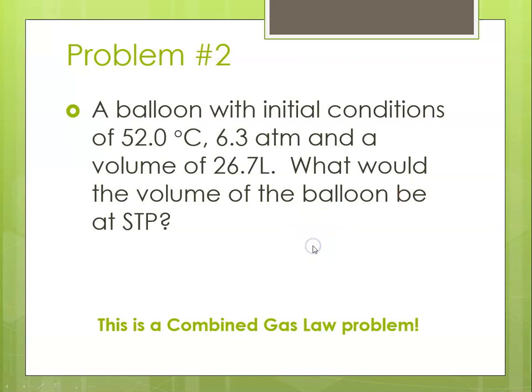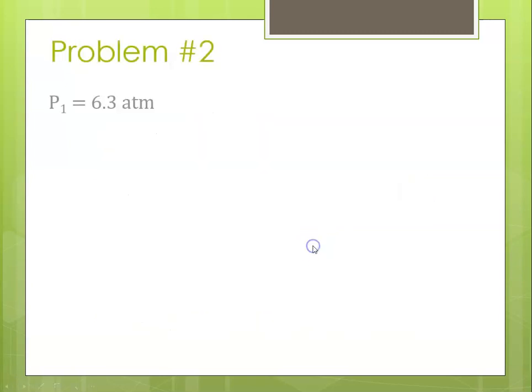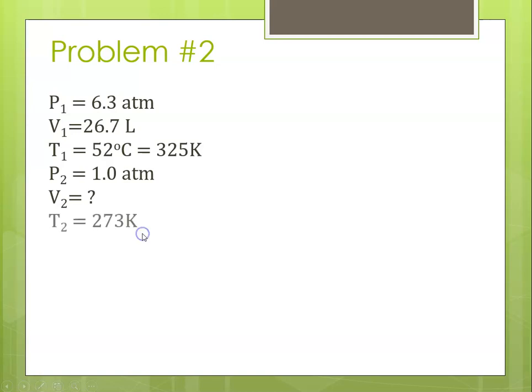So now let's identify the variables. So our P1 is 6.3, our V1 is 26.7, our T1 is 52 degrees C plus 273 is 325 Kelvin. Our P2 is standard pressure, 1 atm, V2 is what we're solving for, and our T2 is standard temperature, 273 Kelvin.